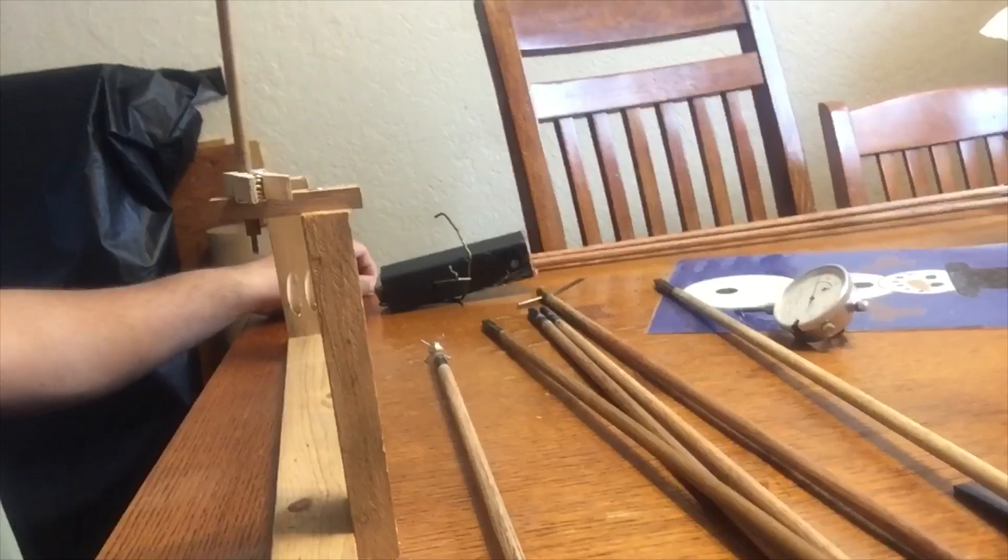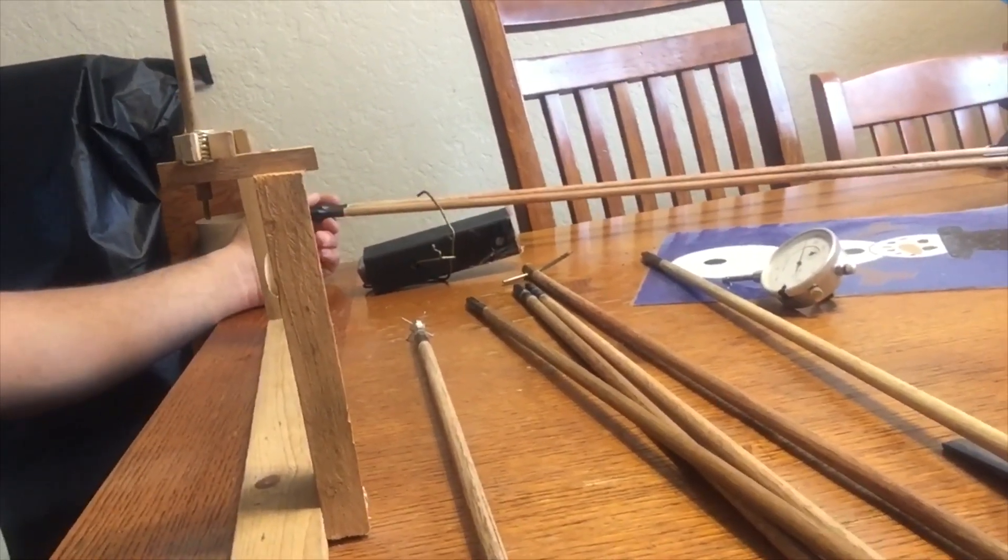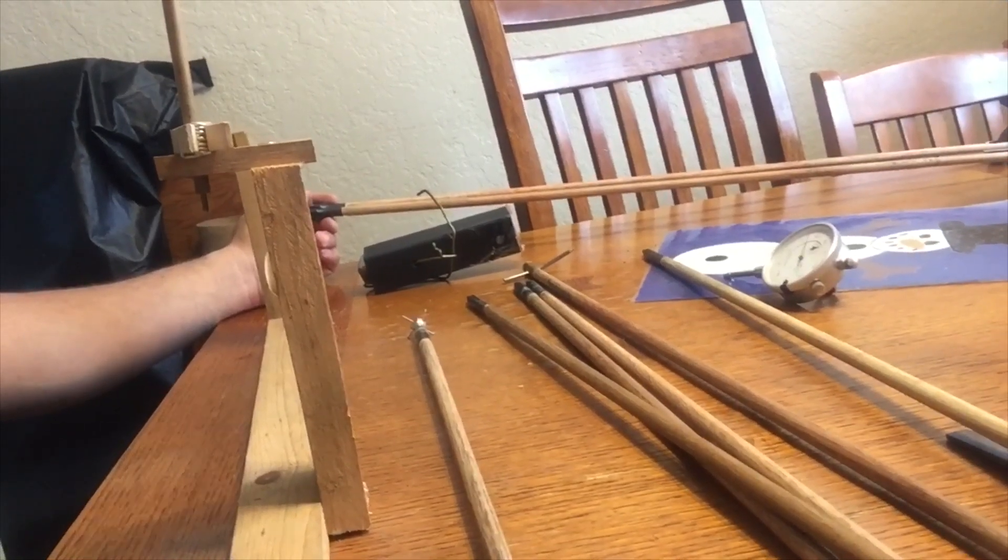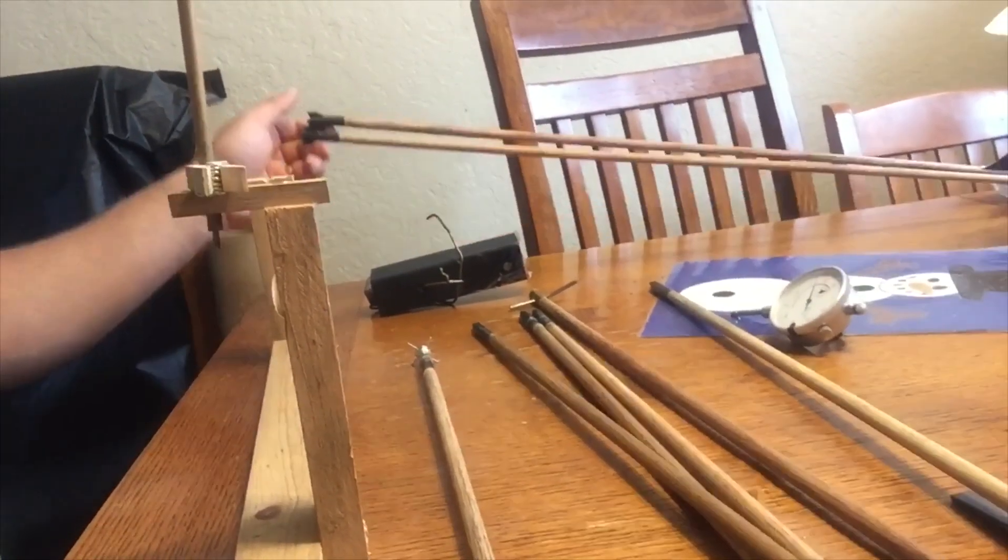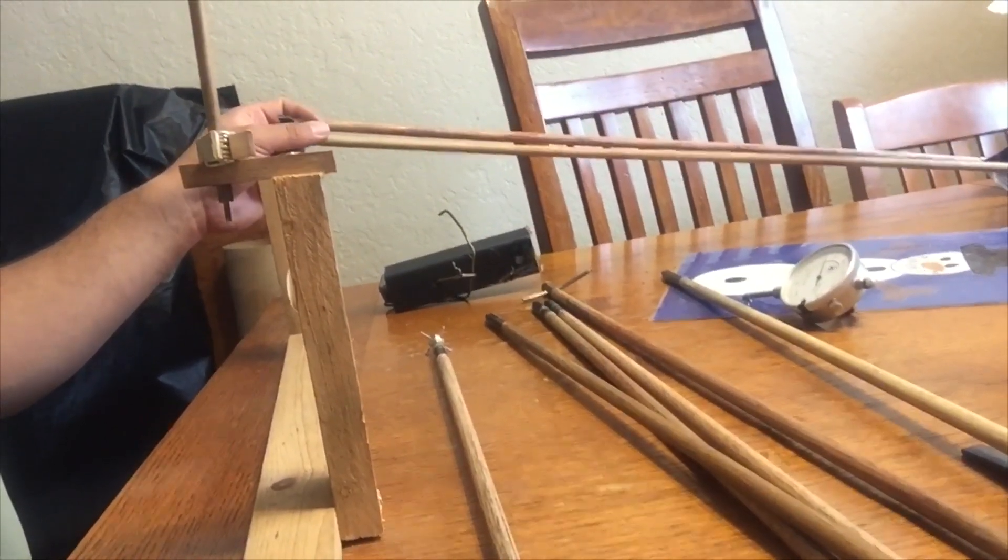So I'm going to change some stuff with these arrows. I'm going to shorten them somehow, probably from the nock end, because these are internally footed with a nail to make them stronger at the shoulder.